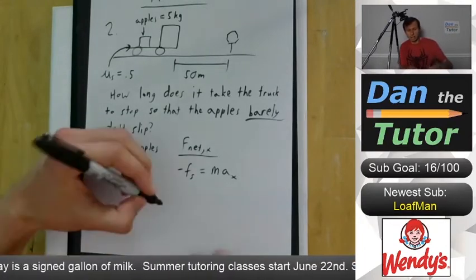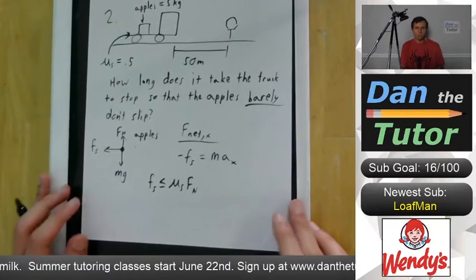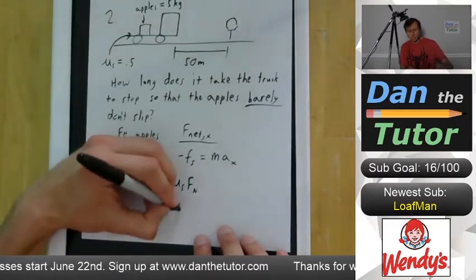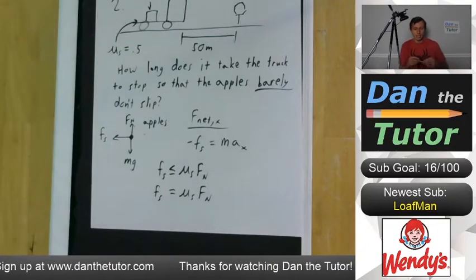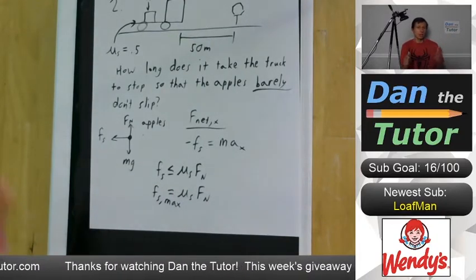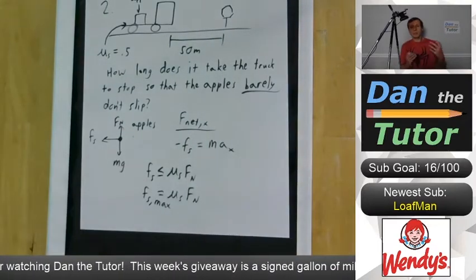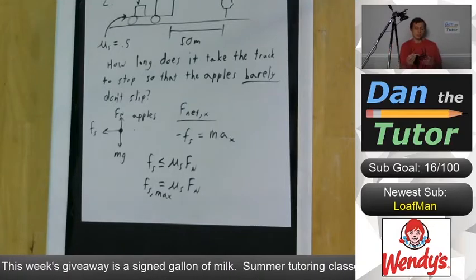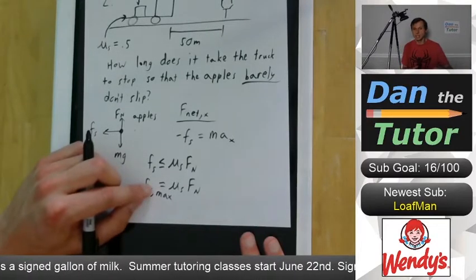What's the definition of static friction? Static friction is less than or equal to μs times the normal force — it's not always equal because it depends on how hard you're pushing. However, there is one time we can say fs equals μs times the normal force: when we're talking about the maximum static frictional force. Are we at max static friction here? Yes, because we're stopping such that the apples barely don't slip — we're using the maximum static friction needed.